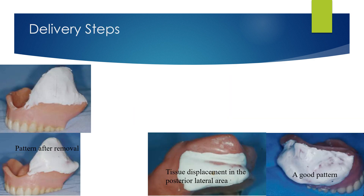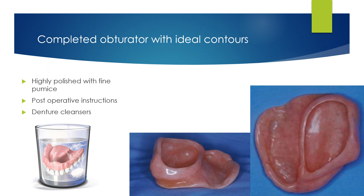On the delivery appointment, pressure-indicating paste is painted generously to reveal excessive tissue displacement, and this step should be repeated at least three times. Finally, the completed obturator should be highly polished with fine pumice, especially in the undercut areas on the posterior and lateral walls, and post-operative instructions should be given to the patient.